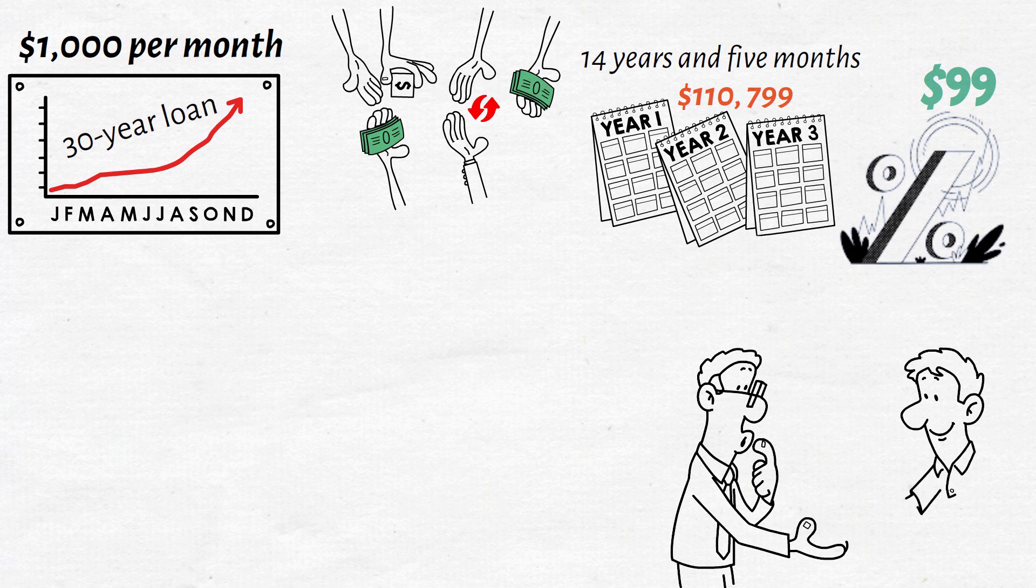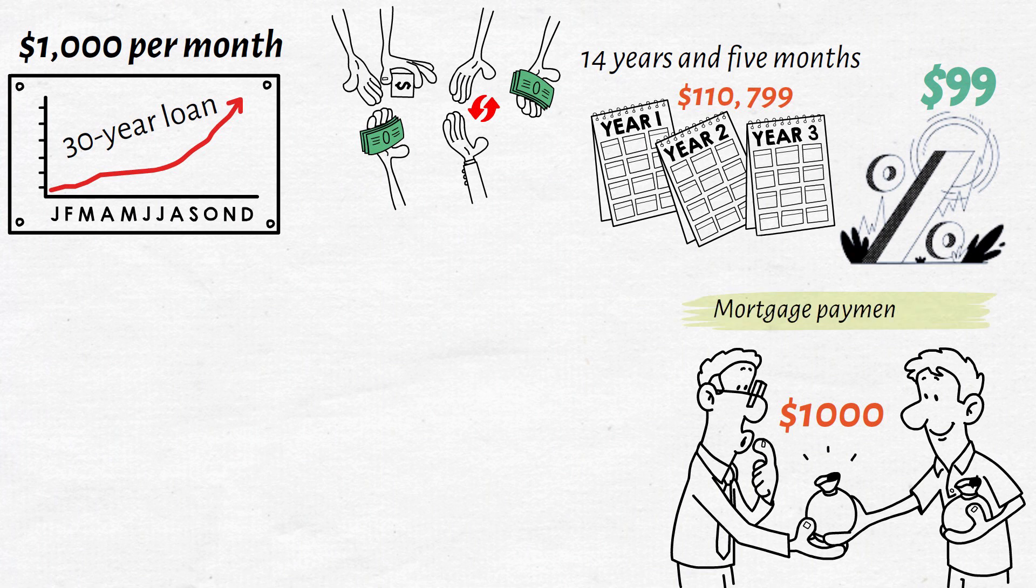Then for the remaining time, you invest not only the extra $1,000 per month but also the amount of the previous mortgage payment, a total of $2,671 per month for 15 years and 7 months later.